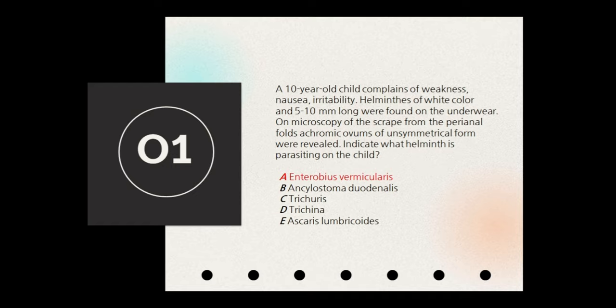The first question is about a 10-year-old child who complains of weakness, nausea and irritability. Helminths of white color and 5 to 10 millimeters long were found on the underwear. On microscopy of the scrape from the perianal folds, achromic ovums of unsymmetrical form were revealed. We need to indicate what helminth is parasiting on the child. The key elements to observe are the morphology: white color, 5–10mm long, depositing achromic ovums in the perianal region.